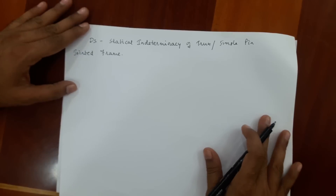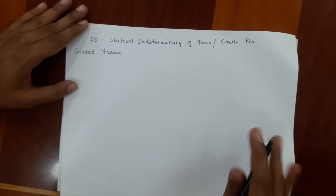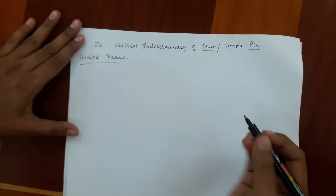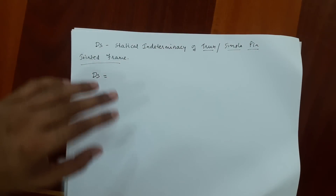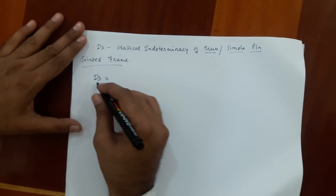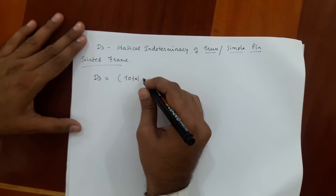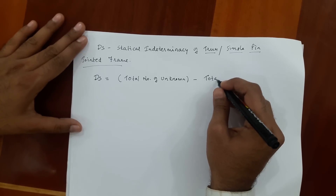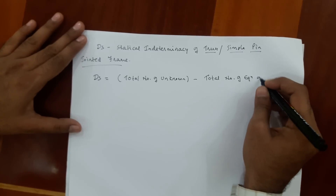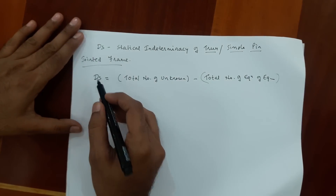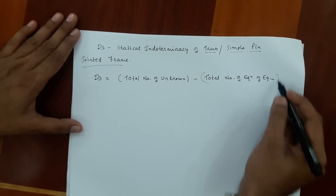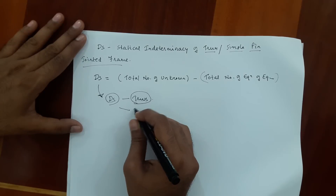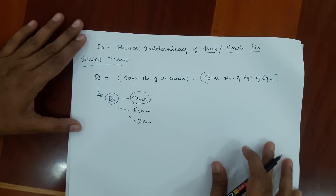Hello everyone. Today we will learn how to analyze or find the degree of statical indeterminacy for a truss or a simple pin-jointed frame. We know the general formula of DS. The general formula, as discussed in the previous video, is DS equals total number of unknowns minus total number of equations of equilibrium. This is the general formula of DS — degree of statical indeterminacy. By this general formula, we can derive DS for truss, for frame, and for beam. Let us look at the truss.